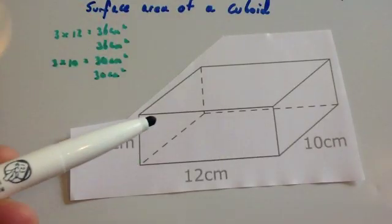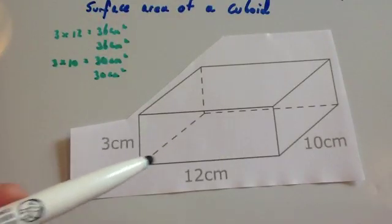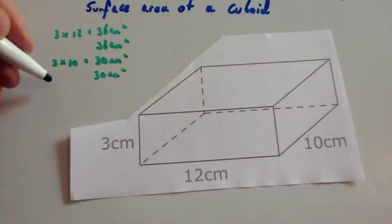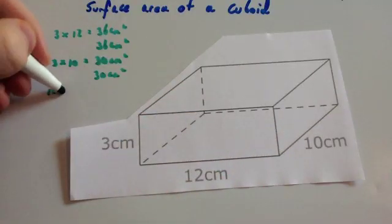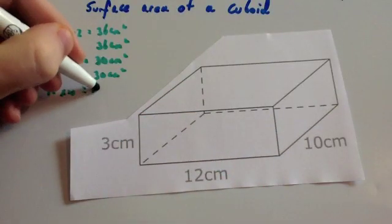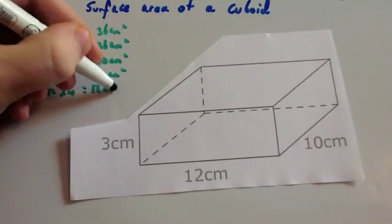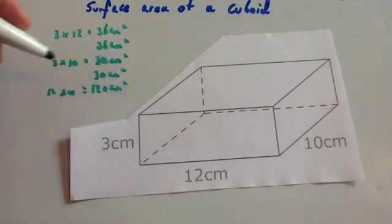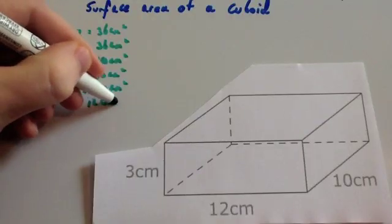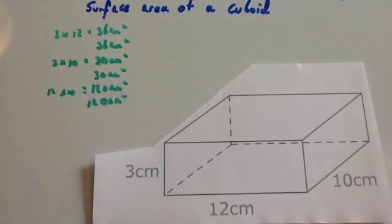Let's now look at the bottom. The bottom is twelve by ten, so you're going to do twelve times ten, which is one hundred and twenty centimetres squared. The top is going to be exactly the same, so it's another 120 centimetres squared.